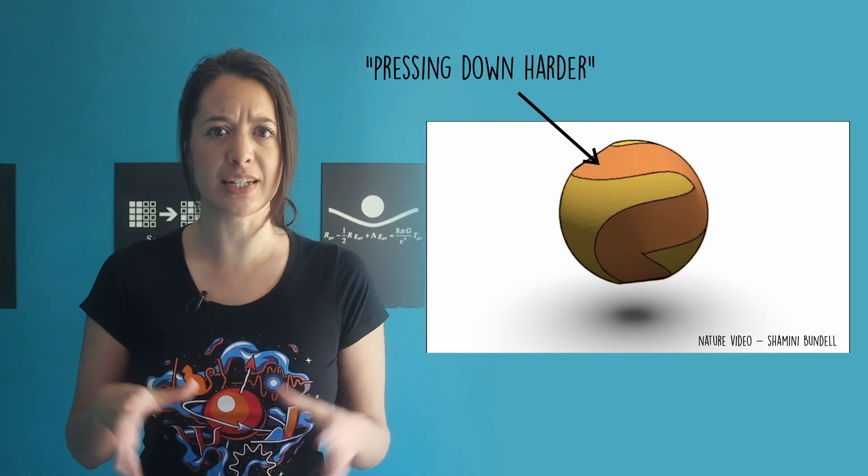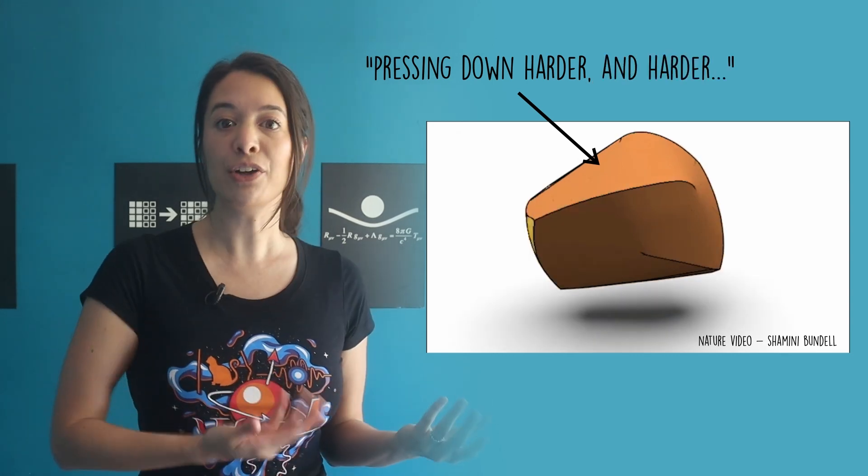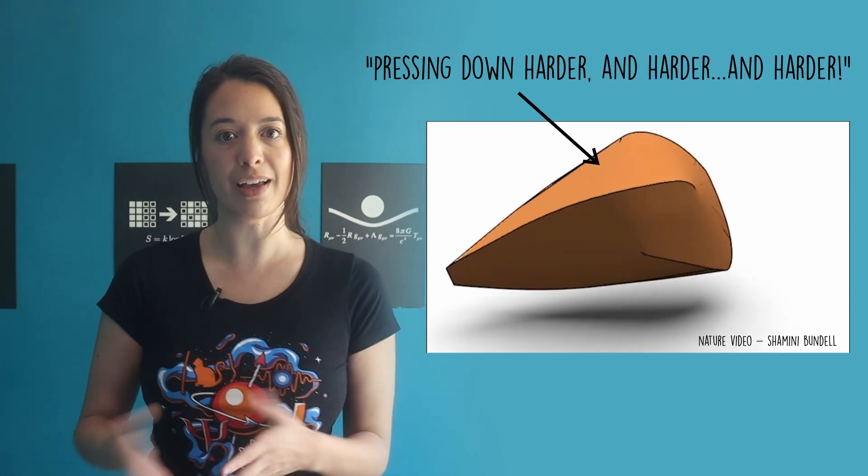The shape construction algorithm that produces trajectoid shapes essentially mimics this pressing down harder behavior and calculates the exact indentations needed to trace any path.